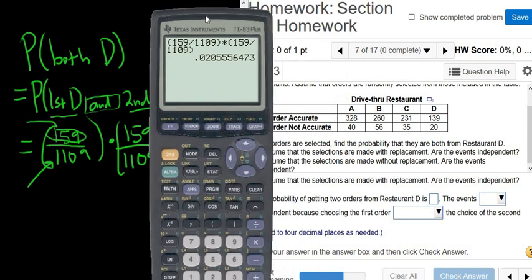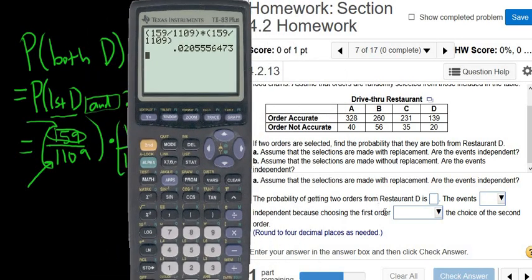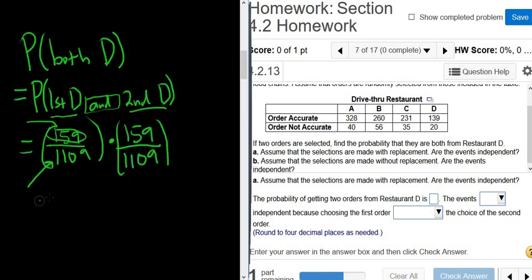So 0.02, and how many decimals does it want? Oh, it doesn't, it wants four decimals. So 0.0206.